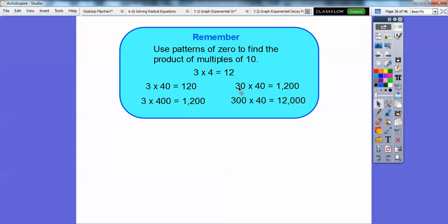30 times 40 is still 12 with this 0 and this 0. So it's still a 12 with 2 zeros or 1,200. 300 times 40, multiply 3 and 4 is 12, and then add on 1, 2, 3 zeros. So it's 12,000 right there.